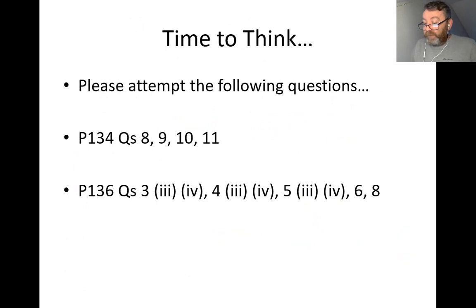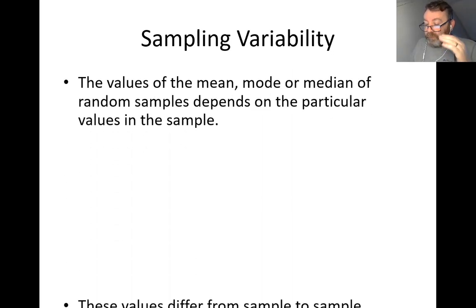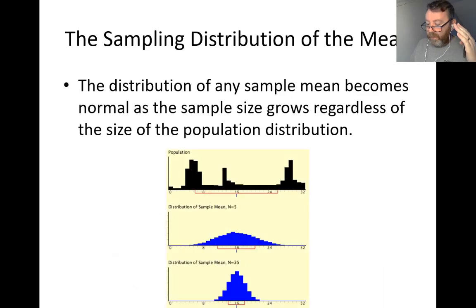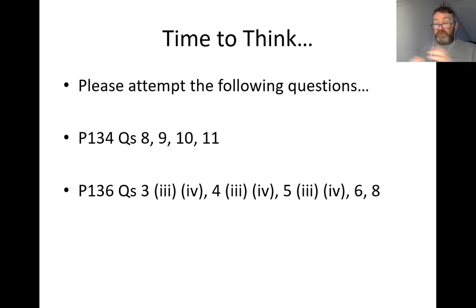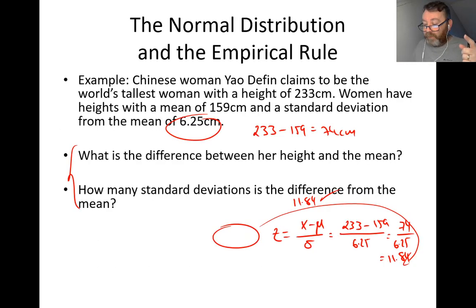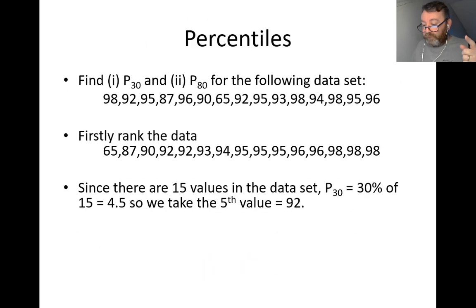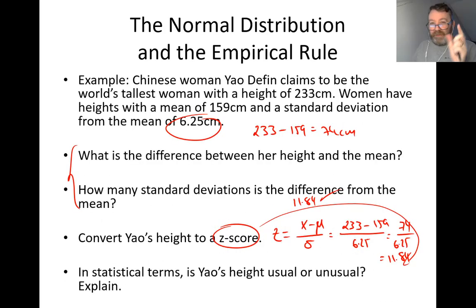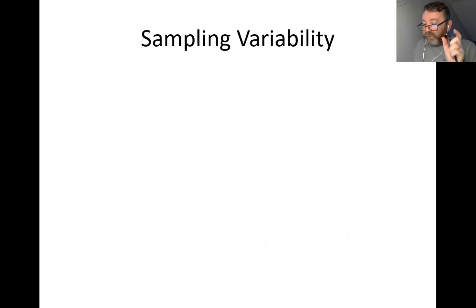That's how you use the empirical rule. For more practice, work through pages 134 to 136, which cover Z-scores and the empirical rule, getting back into the mode of using Z-scores from probability so you're ready for the normal curve later. I'm also going to cover sampling variability separately in the next session.